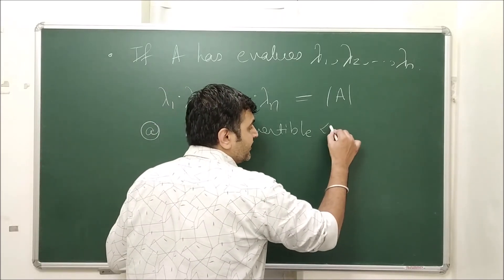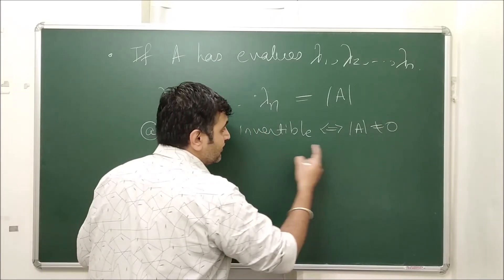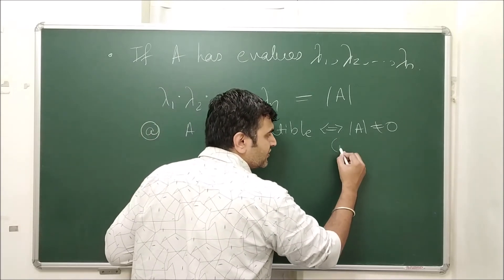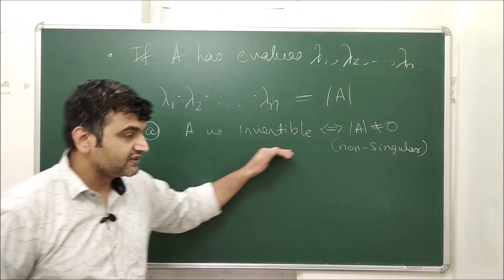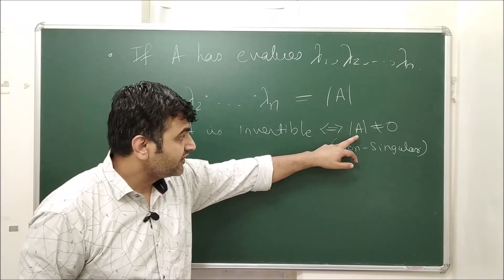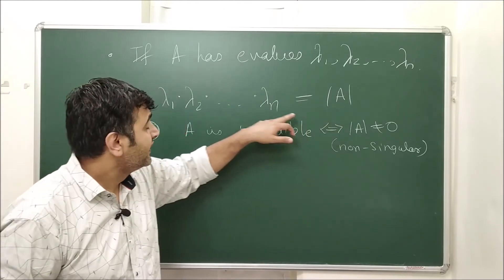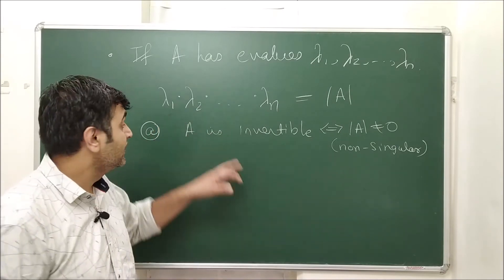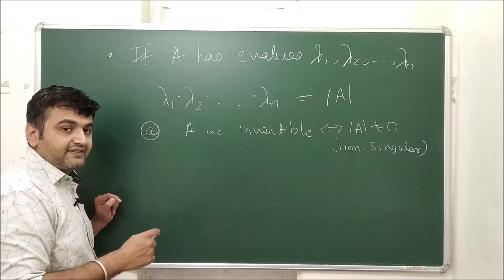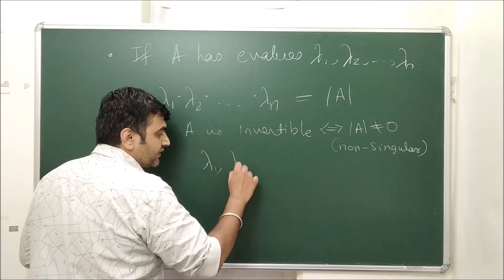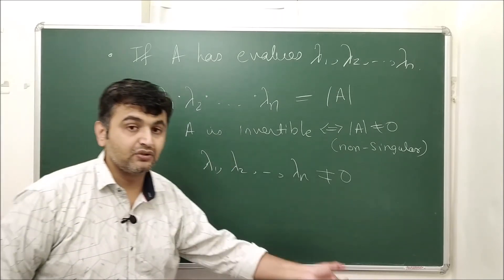This leads to a useful connection with invertibility. A matrix is invertible if and only if its determinant is nonzero — such matrices are called non-singular. Since det(A) equals the product of eigenvalues, if A is invertible, then the product is nonzero, which means every single eigenvalue must be nonzero. So a matrix is invertible if and only if none of its eigenvalues are zero.